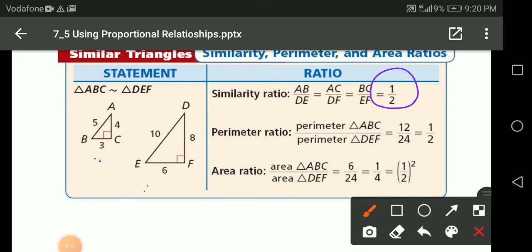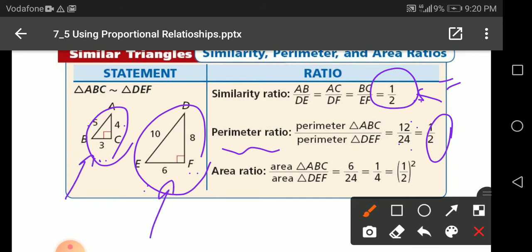So we have two triangles that are similar. The perimeter ratio will be also the same half. The perimeter of ABC over the perimeter of DEF will be 12 over 24. Remember the perimeter is 3 plus 5 plus 4, the sum of all outside lengths. And here also 10 plus 6, 16 plus 8 will give you 24. After simplifying, it gives you here the half.